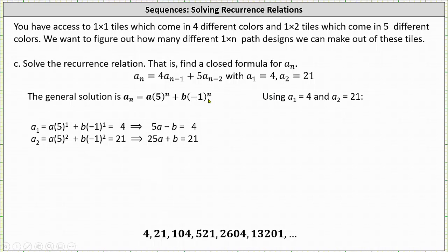When determining a sub one, n equals one, giving us a times five to the first power plus b times negative one to the first power equals four. Simplifying, we have the equation five a minus b equals four. When n equals two, we get a times five squared plus b times negative one squared equals 21, which simplifies to 25a plus b equals 21.